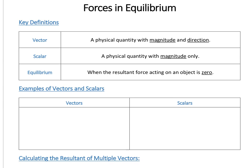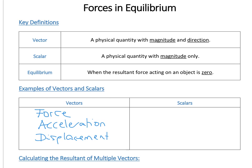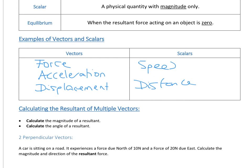Some examples of vectors you'll come across: forces are an example of a vector, as is acceleration, velocity, and displacement — all are vector quantities. In terms of scalars, you have things like speed or distance. They have magnitude but no direction, which makes them scalars.